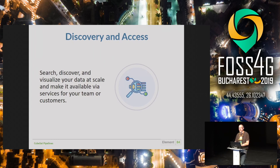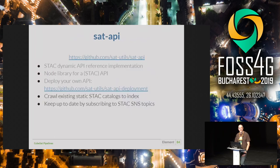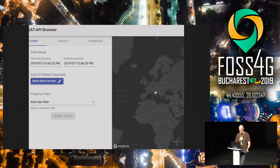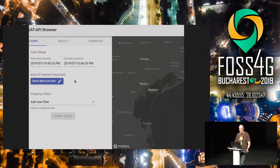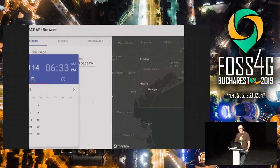For discovery and access — the part end users care about — we use SAT API, a STAC-compliant endpoint, which I'll discuss on Friday. SAT API is open source; you can deploy it yourself and ingest STAC catalogs fairly easily, keeping them up to date by subscribing to SNS topics for new data. With everything in a STAC-compliant API, we can build all sorts of tools on top, including the SAT API browser — recently released as an alpha prototype by Development Seed.